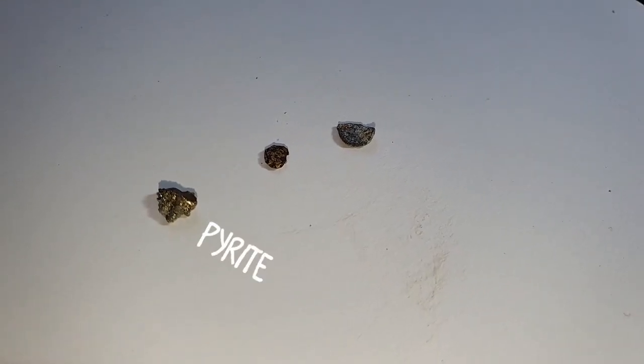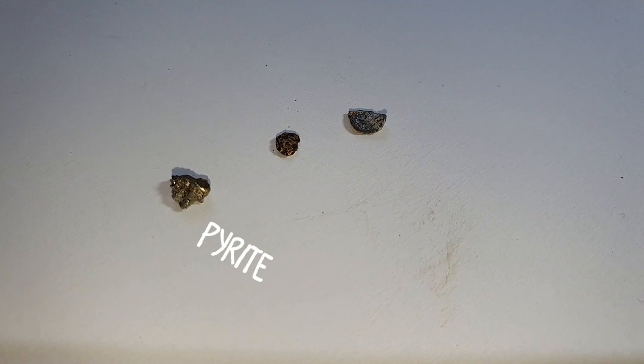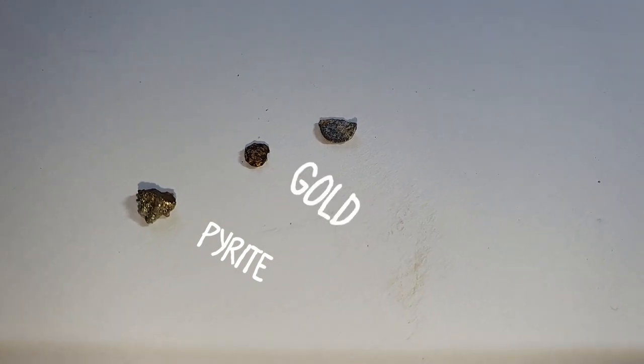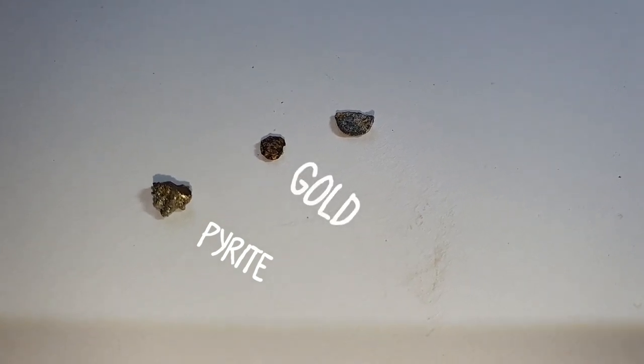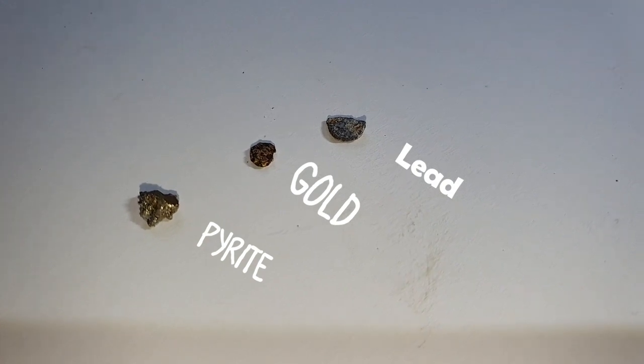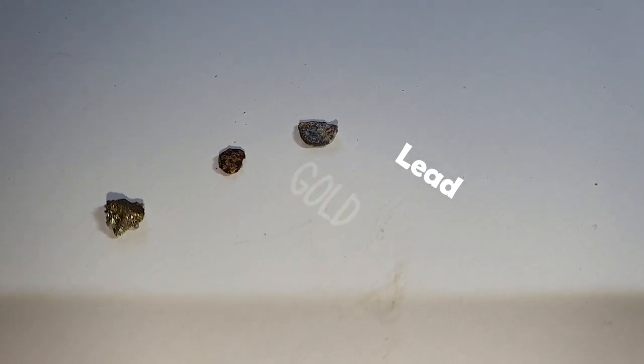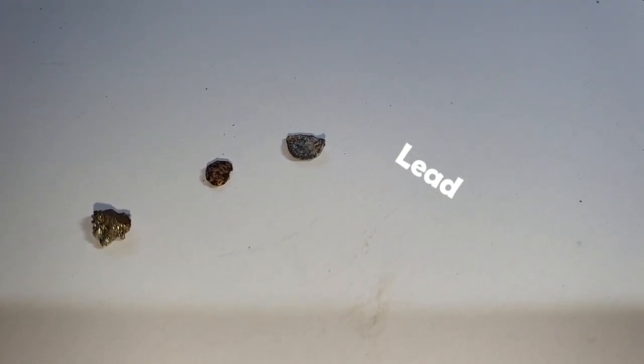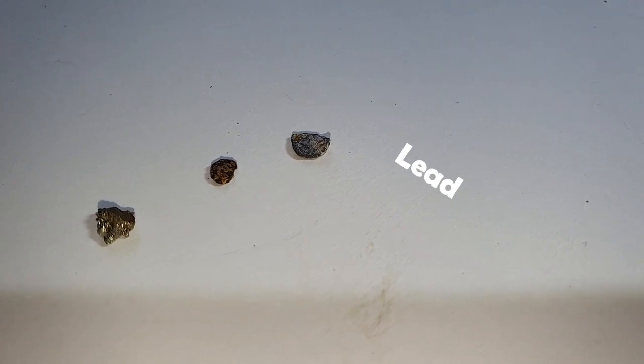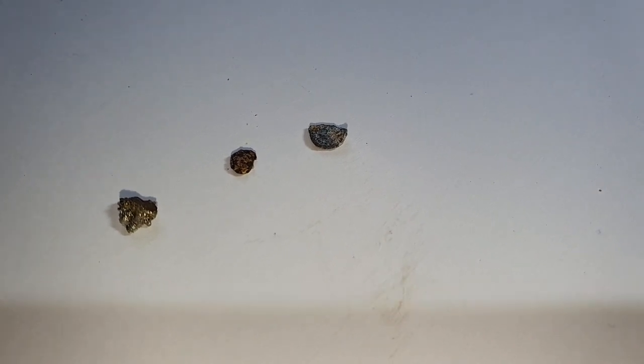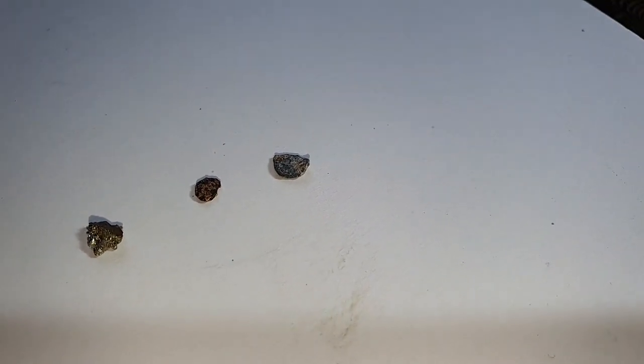Here we have three different things you can get out of the river. The first shiny bit on the left is pyrite, fool's gold. The next bit is a lump of gold, and the final bit there on the right hand side is a piece of lead. Three things you might pick up in your pan. How do you distinguish gold from pyrite?